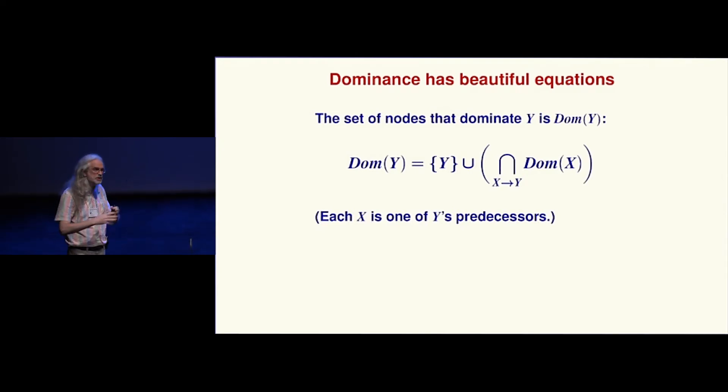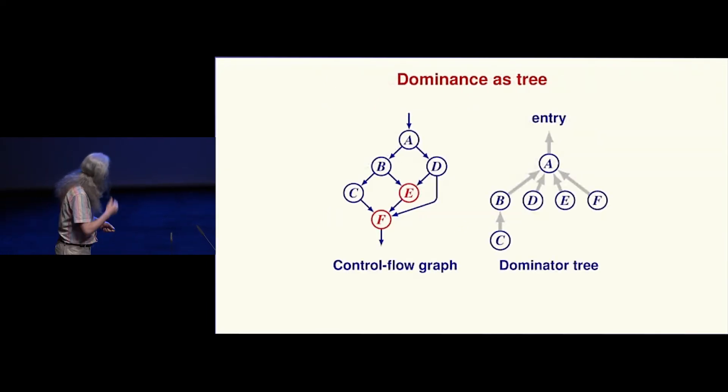The dominance relation has beautiful recursion equations. The set of nodes that dominates y includes y, because every path that gets to y includes y, and it's the intersection of the dominator sets of all the predecessors. You can read all these complicated algorithms by Robert Tarjan about how to compute this, but the concept is simple—it's really very nice.